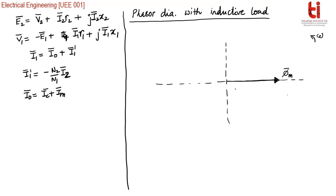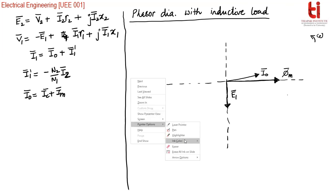As we have always done, we start with the mutual flux as the reference. I have drawn the mutual flux phi m along the positive x-axis. This mutual flux was caused by the no-load current. Since it is the non-ideal case, the no-load current is leading the flux, so I have drawn the no-load current I0 here. The angle between them is called the hysteric angle.